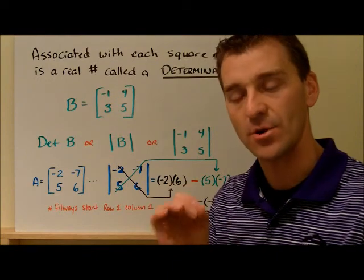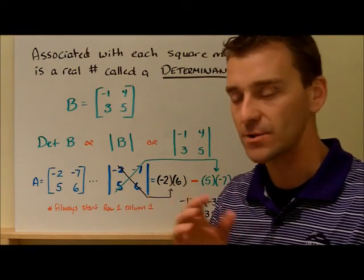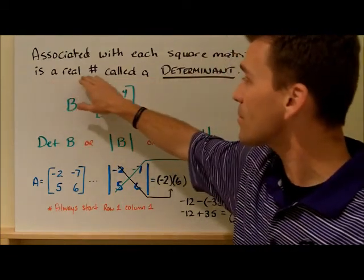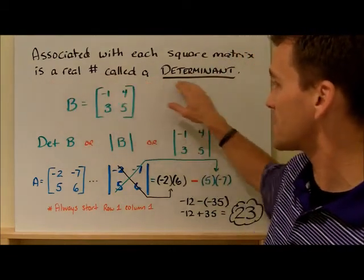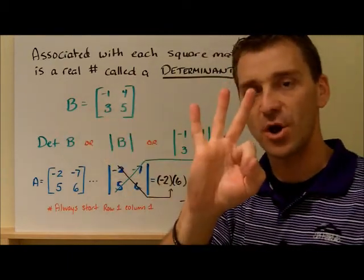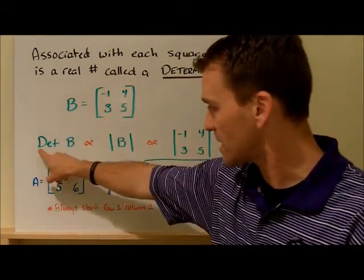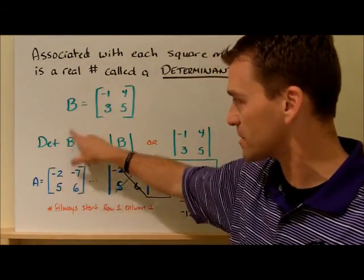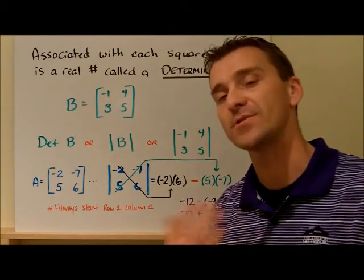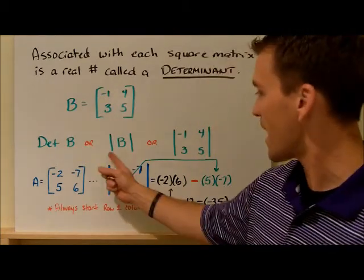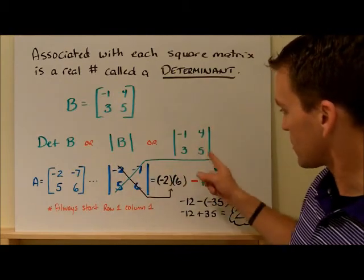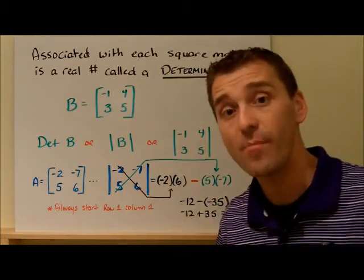So rows and columns have to be exactly the same: two by two, three by three, eight by eight, twenty by twenty, whatever. So a square matrix is associated with a real number that we call a determinant. We have three ways that you're going to denote determinant. It might say DET and then the actual matrix B. You might have these little things that look like absolute value symbols, but we're talking about a matrix now so it means something different. That symbol might be around the matrix, or you just might put the little straight symbols in the numbers. So that all means determinant.